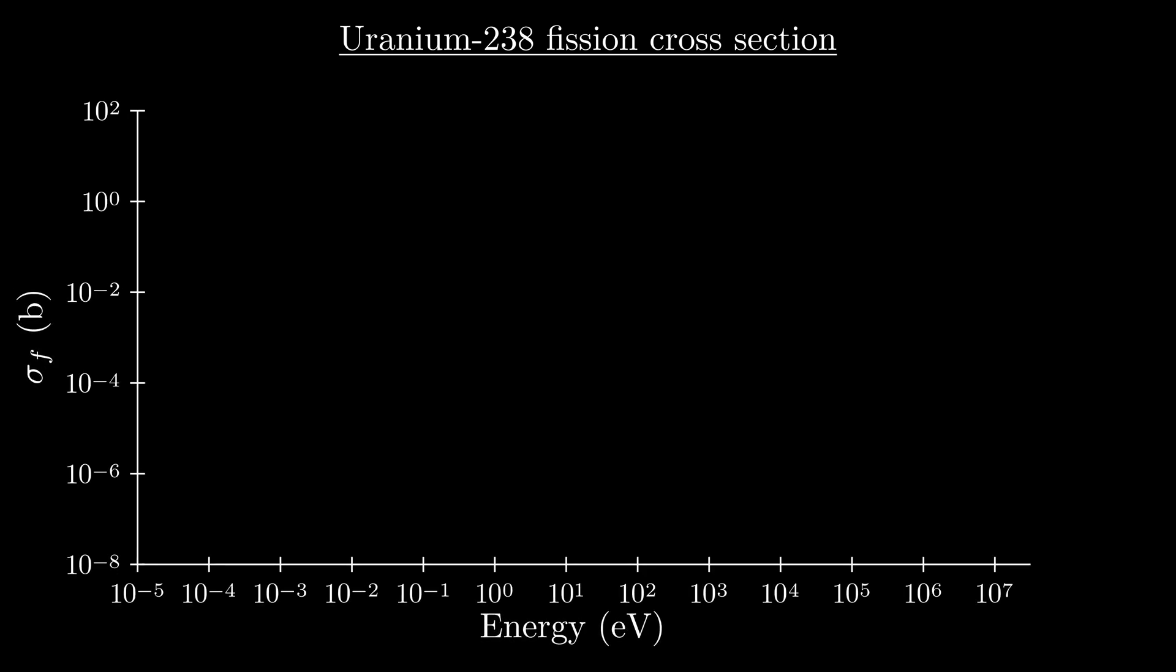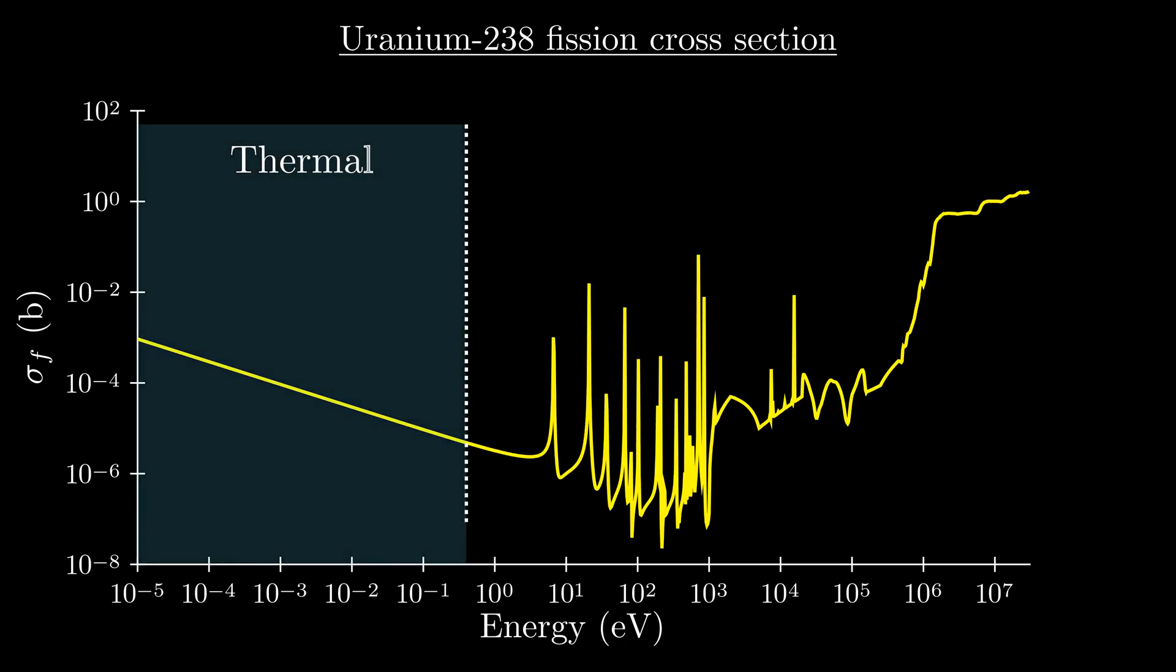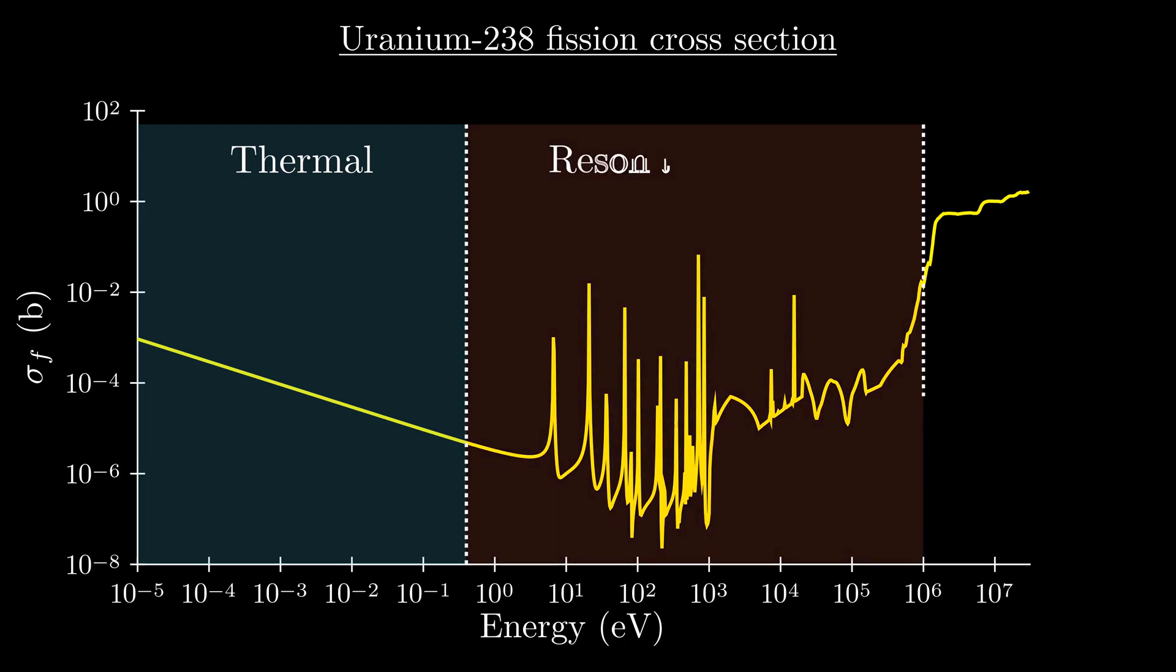Now let's look at something a little more interesting. Let's plot the fission cross section of the most common isotope of uranium, uranium-238. Right off the bat, things are looking a little more complicated here. At thermal energies, we can still see the 1 over v region that we saw with hydrogen, but then once we get to these intermediate energies, which are sometimes called epithermal energies, things kind of go crazy. We have these steep peaks and valleys where specific energies of neutrons are tens of thousands of times more likely to cause fission than neutrons with just slightly different energies.